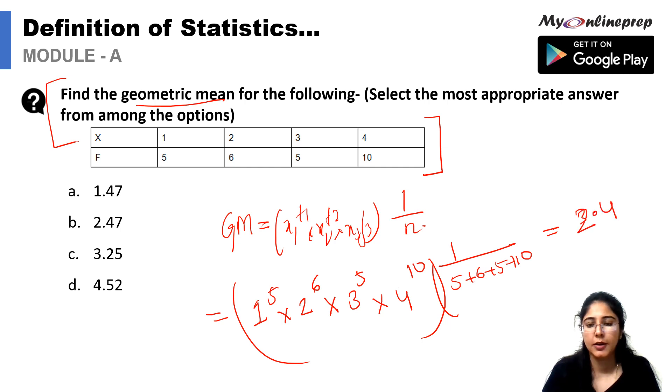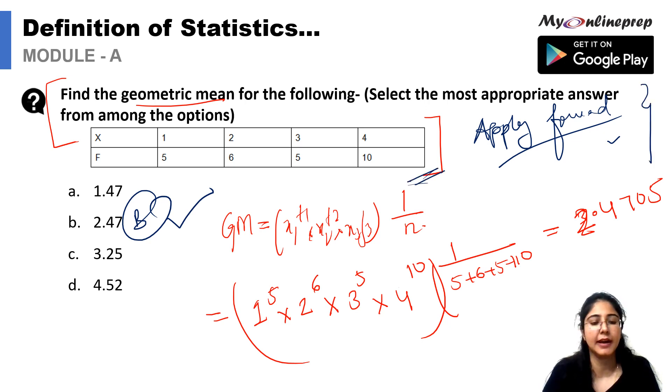After solving this we will get our answer as 2.4705. Option B is the correct option for this question. We have to apply the concerned formula and we will get our answers. Each question will carry some marks and these marks totally depend upon how you solve the questions. It would be better if you use the basic formulas to find out the solution so that you don't waste much time in having lengthy calculations. Apply the concise formula and go to the answers.